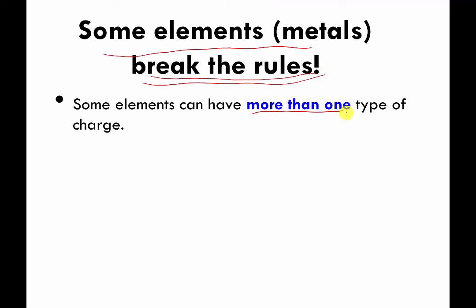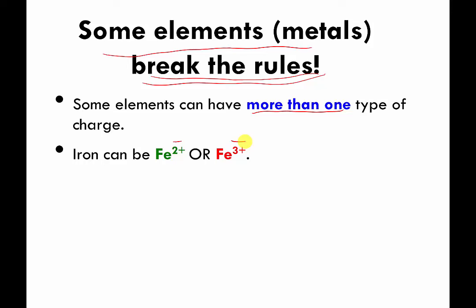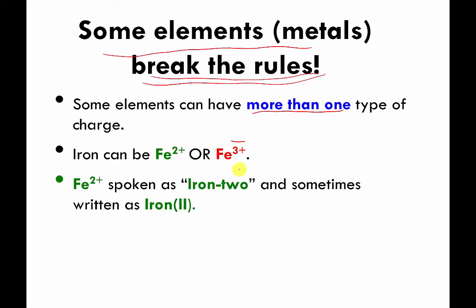As an example, iron — the symbol for iron is a little weird, it's Fe — basically comes in two charges: it can either be charged at plus two or plus three, depending on the environment it's in. Because of that, you have to tell people what type of iron ion you're working with. You can't just say 'I'm working with an iron ion' because people will ask which one — the one that's plus two or the one that's plus three.